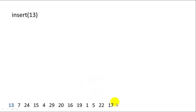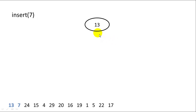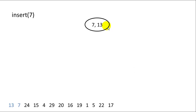We're going to build a 2-3 tree by inserting this list of items. We'll start by inserting 13 — when we insert 13 we create a new node, put 13 in as the value, and point the root pointer at this node. Now we insert 7 — it fits in the root node, so we add it and sort the items. Next we'll insert 24, adding it to the root node.